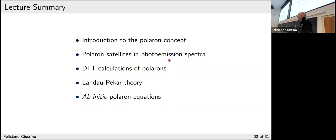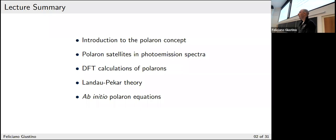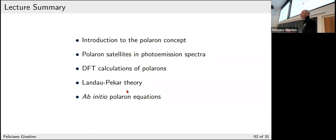Then I will discuss some recent experiments on something called polaron satellites. And I will explain what they mean and why people are interested in that. Then I would summarize what people do when trying to calculate polarons using density functional theory, explain what are the challenges, and then we will try to solve these challenges first by studying the Landau-Pekar theory of polarons, which is essentially the first model ever built of polarons in the 1940s, and then trying to extend these models to full ab initio calculations. That's basically the plan.